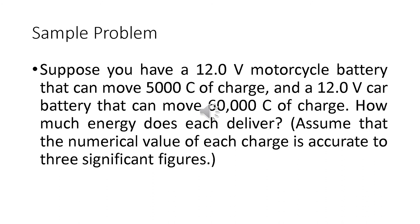Let's proceed to the sample problem. Suppose you have a 12 volt motorcycle battery that can move 5000 coulombs of charge and a 12 volt car battery that can move 60,000 coulombs of charge. How much energy does each deliver? Assume that the numerical value of each charge is accurate to three significant figures. There are two situations: first is the motorcycle battery that can move 5000 coulombs, and the second is the 12 volt car battery that can move 60,000 coulombs of charge. We will proceed to the solution.